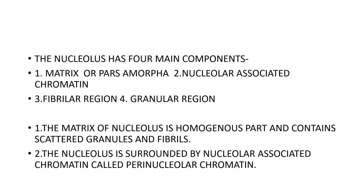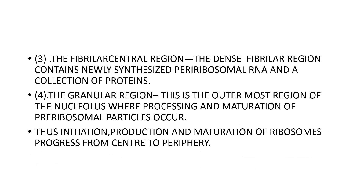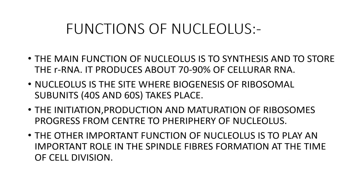Number 3 is the Fibrillar Central Region. The dense fibrillar region contains newly synthesized pre-ribosomal RNA and a collection of proteins. Number 4 is the Cortical Granular Region. This is the outermost region of the nucleolus where processing and maturation of pre-ribosomal particles occur. Thus, initiation, production and maturation of ribosomes proceed from center to periphery.